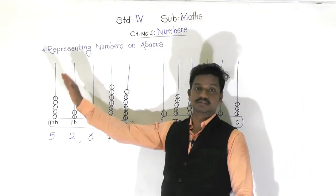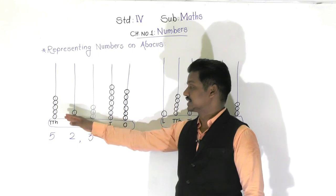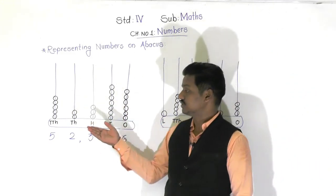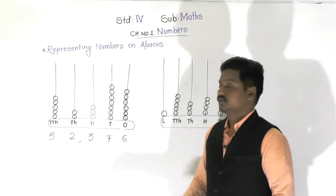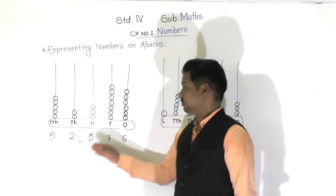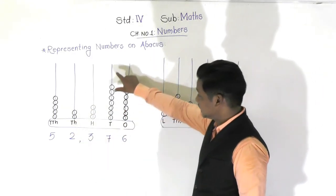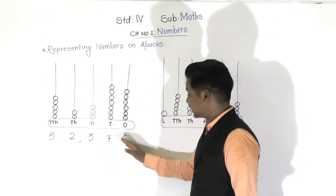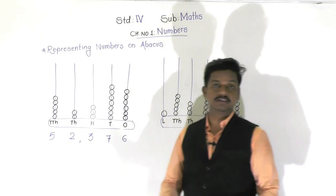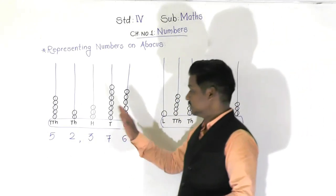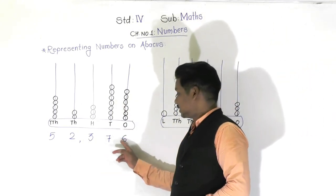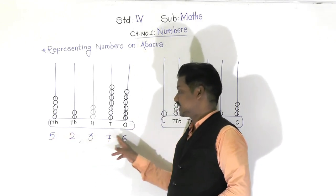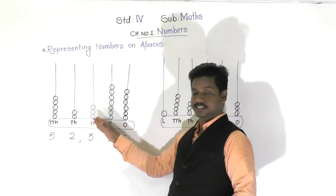So when an abacus is given with some beads inside it, and the question asks you to identify the number represented by the abacus, we have to do it this way: count the beads in each spike for each place, write the digits, and then identify the number as per the place values. Here the places are ones, tens, hundreds, thousands, and ten thousands, giving us 52,376. This abacus represents this number.